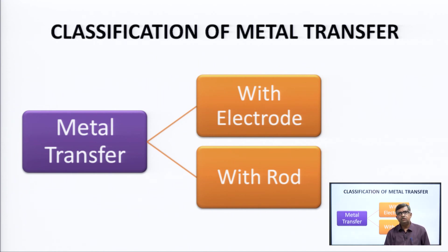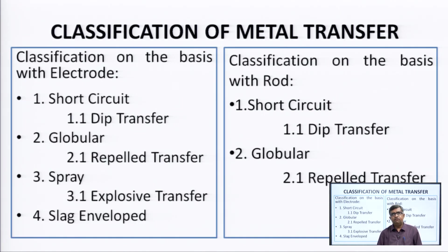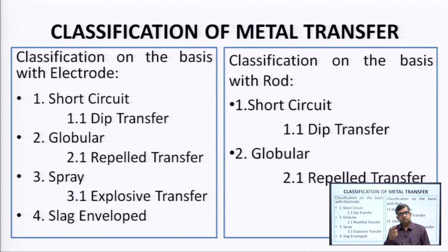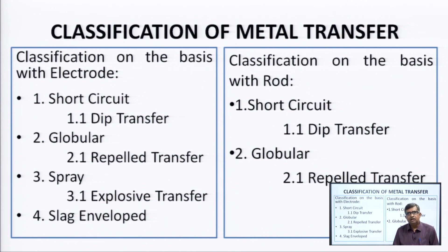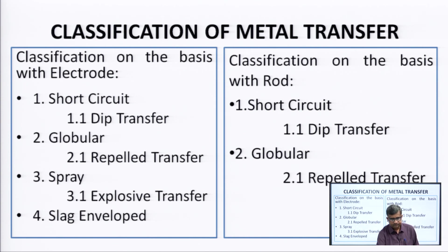Metal transfer depends on the electrode and rod. Classification of metal transfer on the basis of electrode includes: short circuit, dip transfer, globular repelled transfer, spray transfer, and slag enveloped. On the basis of rod, short circuit and globular repelled transfer also take place.